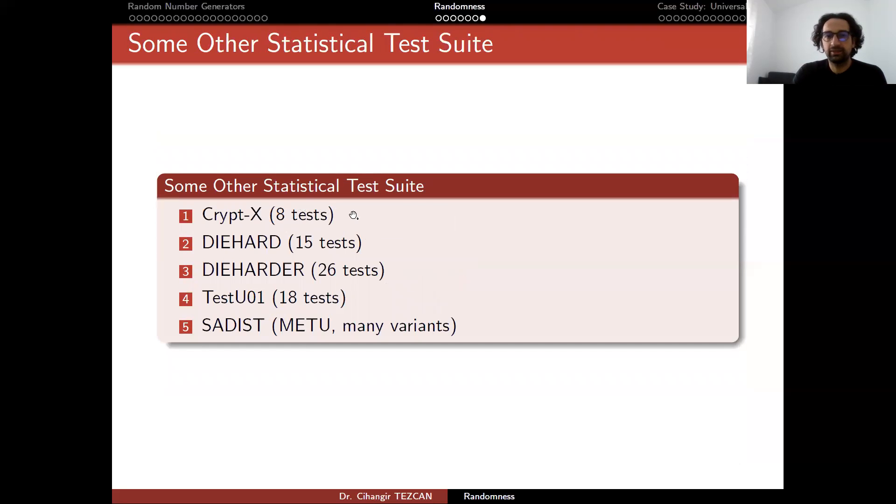So there are other statistical test suites too. For instance, CryptX has 8 tests. Diehard has 15 tests. Dieharder has 26 tests. TestU01 has 18 tests. In Middle East Technical University, we had a statistical test suite that we call SADIST. And during many years, many different research groups actually work on it. So there are many variants. In some of them, we have even more than 30 tests. But having more tests doesn't mean that it is better.